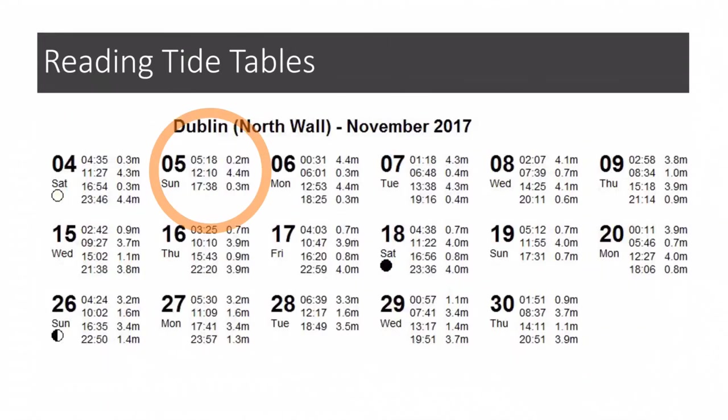If we move on to the Sunday, we can see that high water then is 10 past 12, and low water is not long after half past five. But why is there a difference in the time of high water today compared to yesterday?